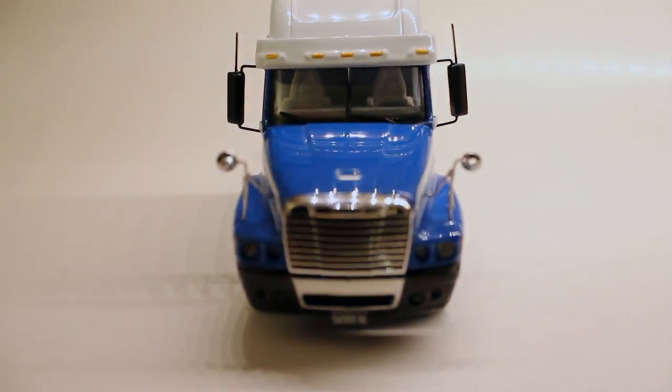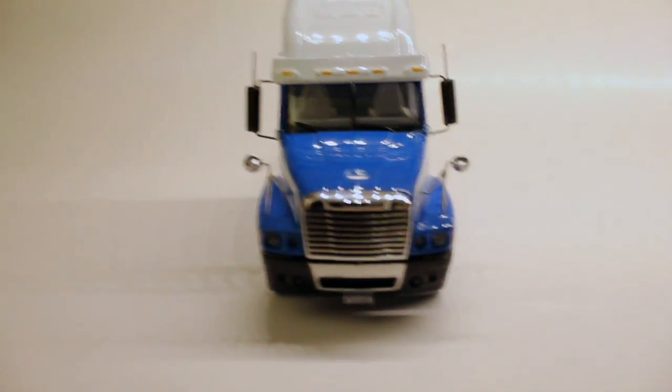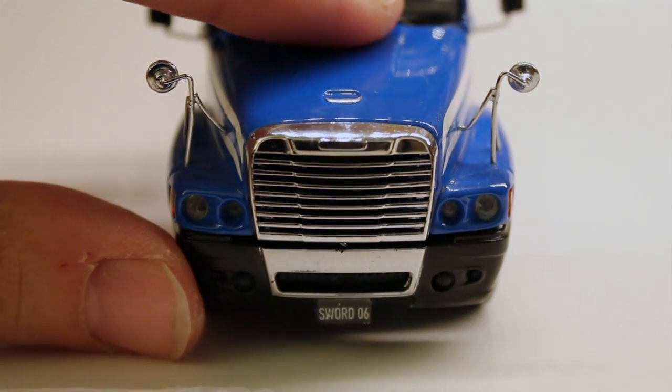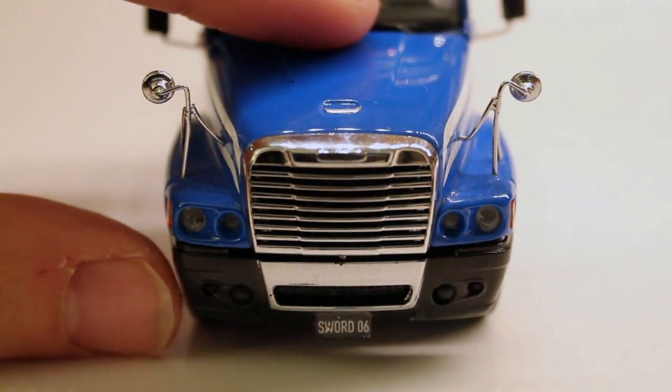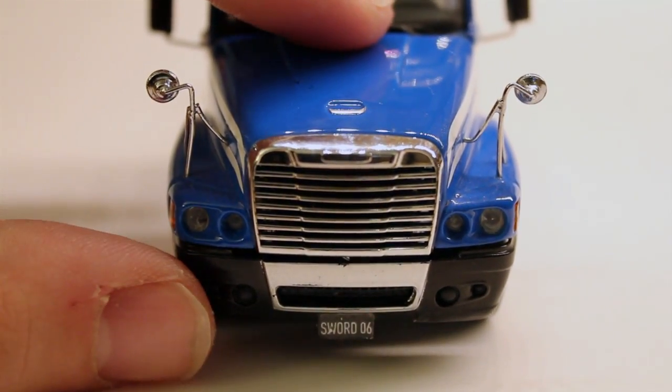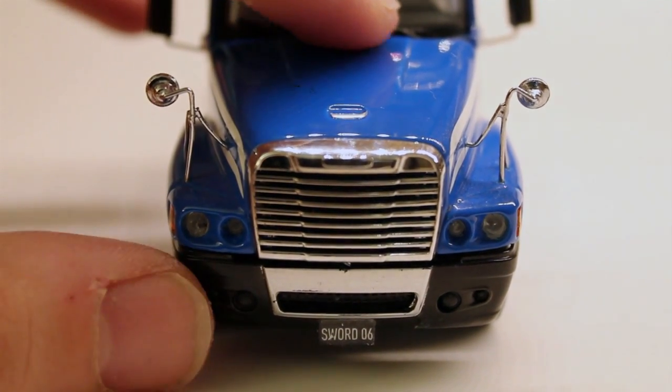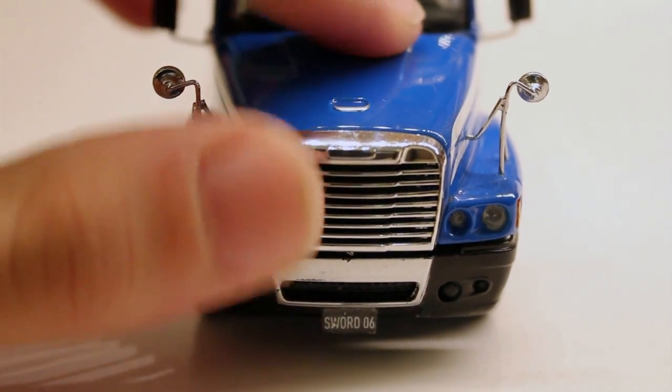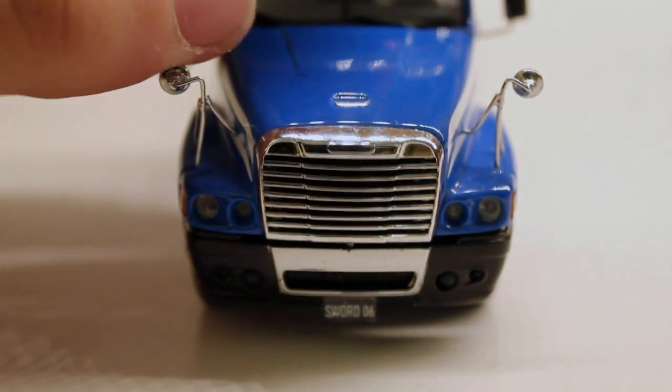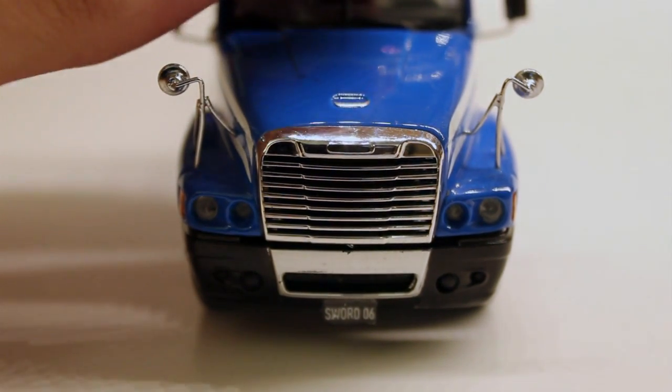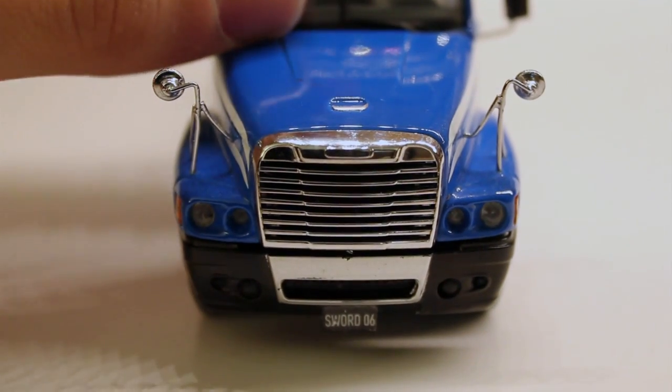Looking at the front of the truck at the hood, you can see the Sword 06 license plate. That's pretty much the year that it was made—every single Sword model has the last two numbers of the year that it was made. You can see all the lights on the front and the grille. The very nice thing about the grille is that it's etched through, and when I show you the engine, I'll show you what I mean by that if you don't know. That really does show build quality.